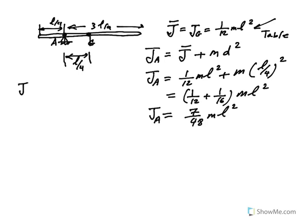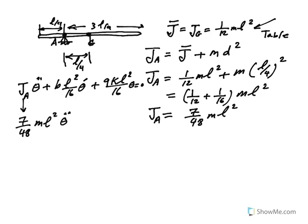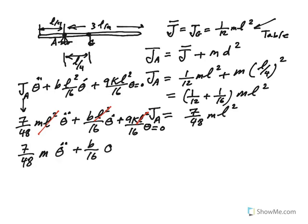So let's go back. Remember, our differential equation was J sub A theta double dot plus B L squared over 16 theta dot plus 9K L squared over 16 theta equals 0. Notice that L squared is common, so it can be canceled out. So now our differential equation is reduced to 7/48 m theta double dot plus B over 16 theta dot plus 9K over 16 theta.